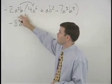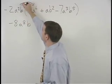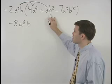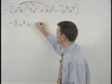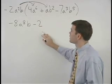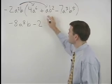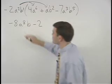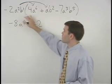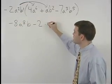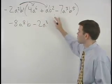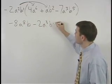Next we multiply negative 2a squared b times positive ab squared. So we have negative 2 or minus 2, and think of the a as a to the first and the b as b to the first. So we have a squared times a to the first which is a to the third, and b to the first times b squared which is b to the third.